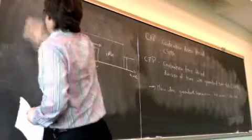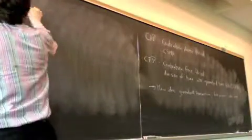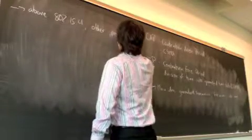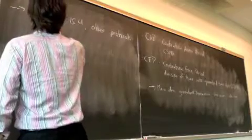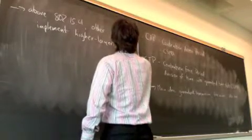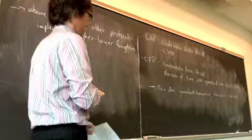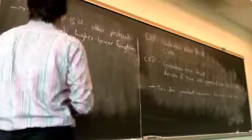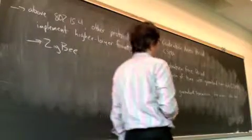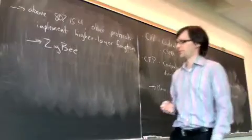Different solutions are required at the network layer and above. So for instance, above 802.15.4, other protocols implement higher-layer functions. One example of a protocol that sits on top of, and possibly the most famous example of a protocol that sits above 802.15.4 is called ZigBee. So ZigBee basically completes 802.15.4 by providing all of the higher-layer network functions. In particular, one that it provides is routing.